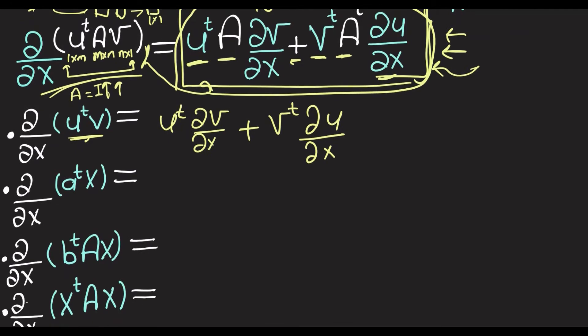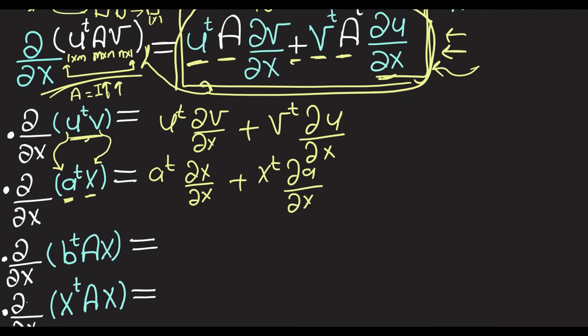Now, how about ∂/∂x of a-transpose x? Here u is replaced by a constant column vector a, and v is replaced by the column vector x. We'll have a-transpose times ∂x/∂x plus x-transpose times ∂a/∂x. Differentiating the constant column vector a with respect to x gives a zero matrix, and ∂x/∂x is I, so the result is just a-transpose.